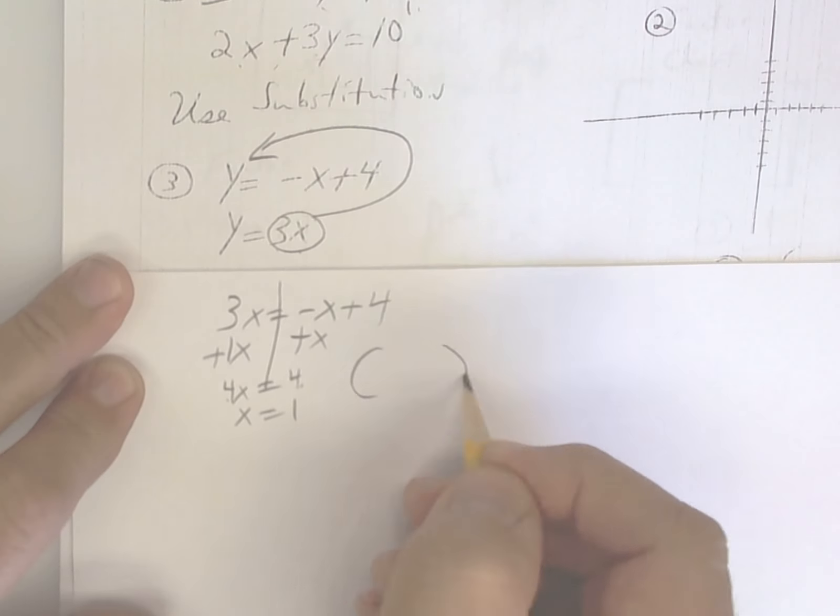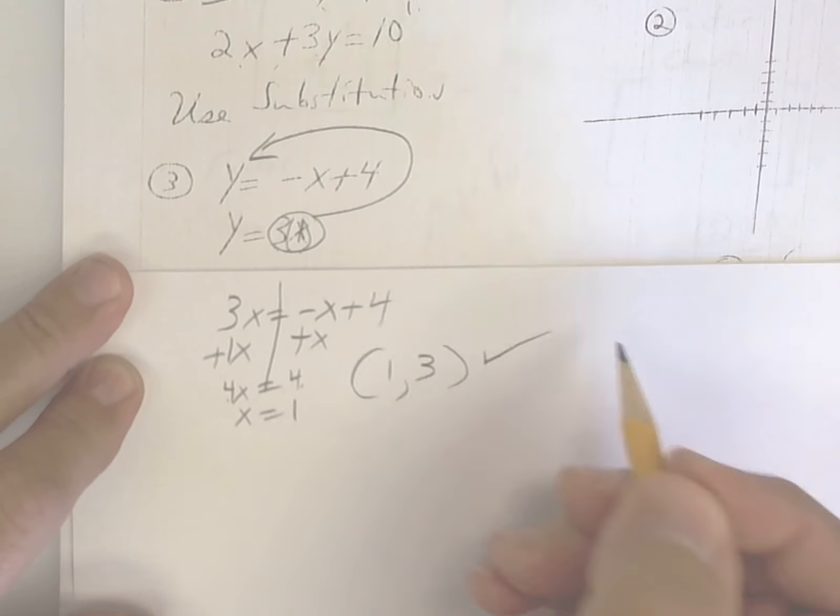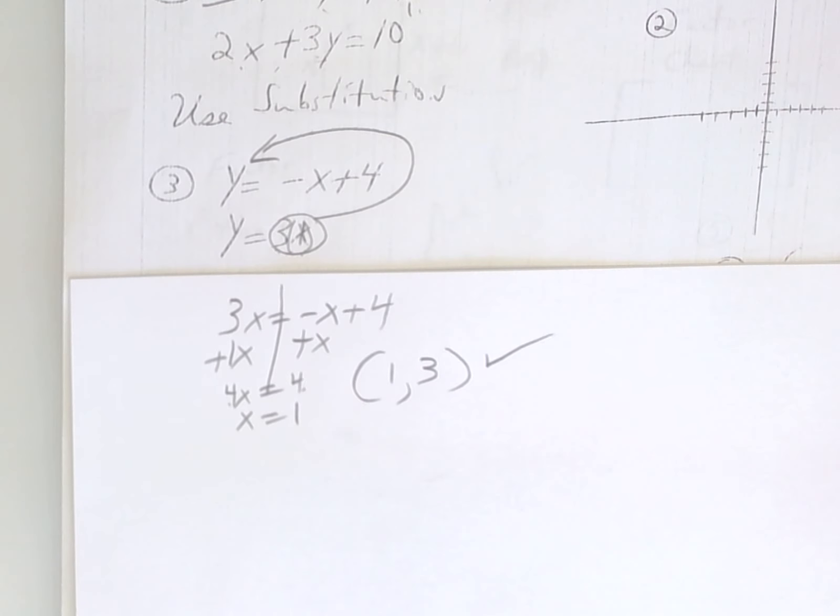4 divided by 4 is 1. So x is 1. Put the 1 right here. 3 times 1 is 3. And you're done. And that's called substitution.